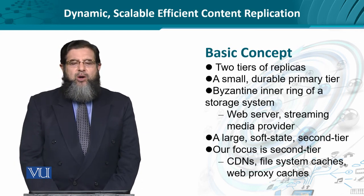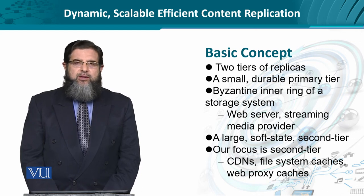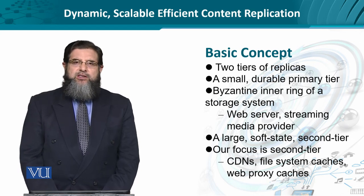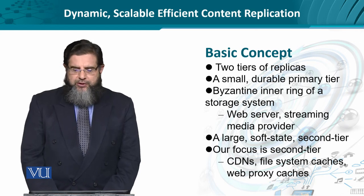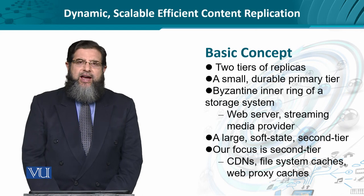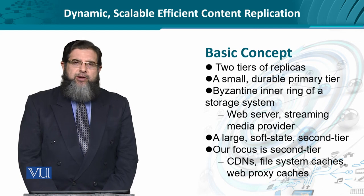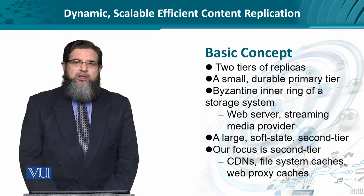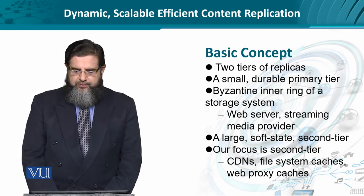We can think about the creation of replicas in a content delivery network at two levels. In the first level or tier, we have a small group of servers which are very consistently updating the content from the original server. We can think about it as a Byzantine inner ring — a security terminology — where the original content from a web server or streaming media provider can be replicated onto this ring.